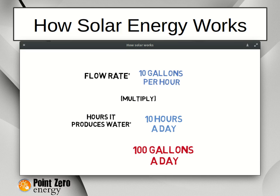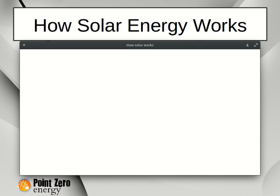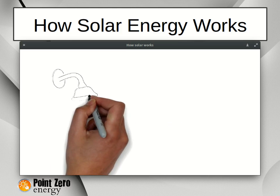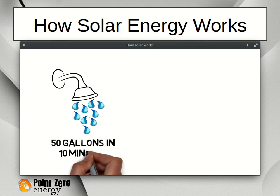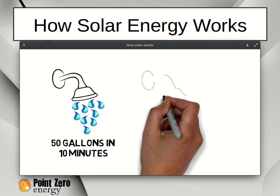This gives us 100 gallons of water a day. Since we only need 50 gallons for our shower, we know that we will have enough water. So yes, our spring will produce enough water.